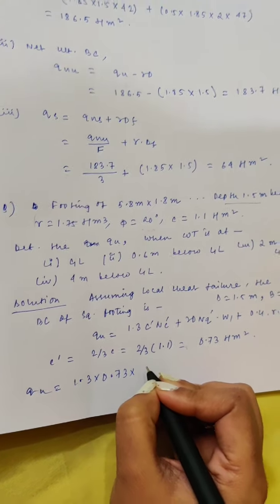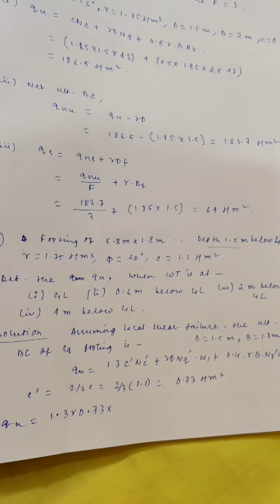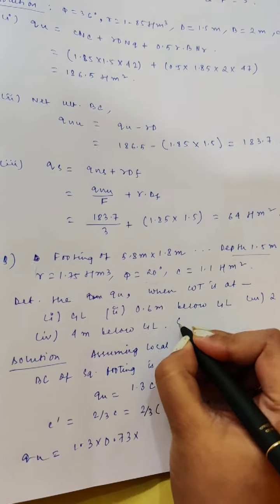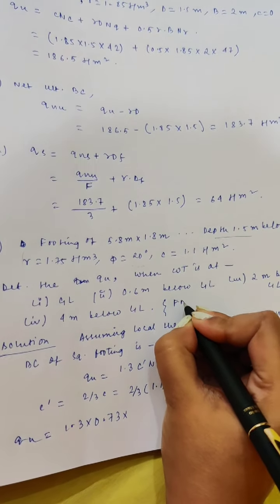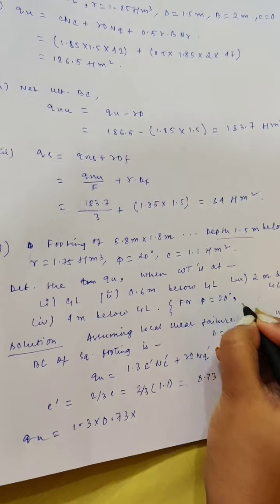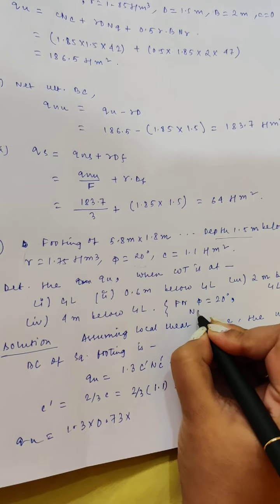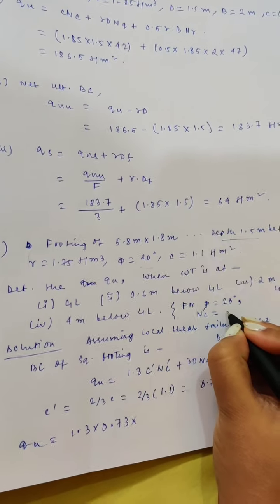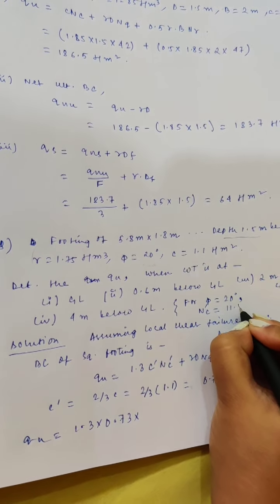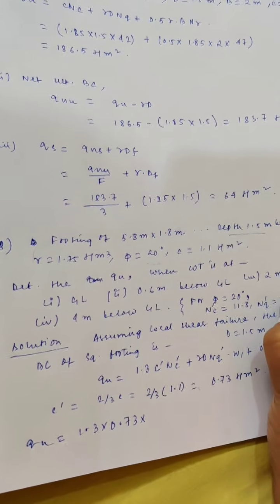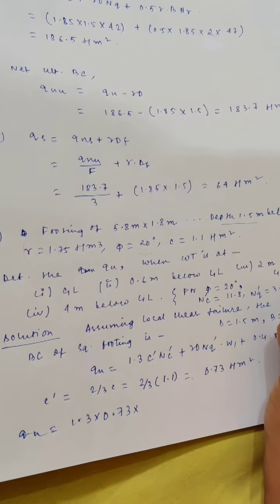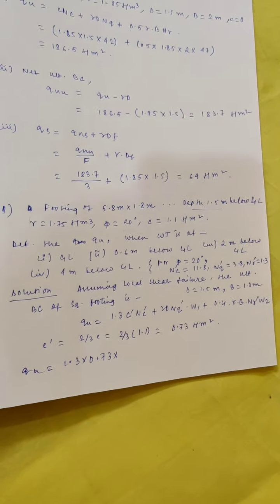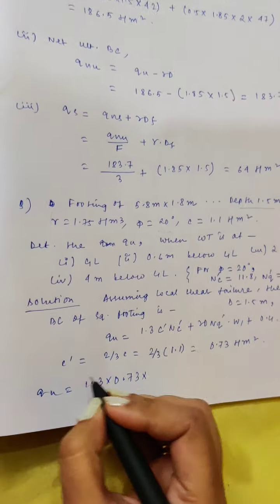Gamma is 1.75 ton per meter cube, D is 1.5 meter, and B is 1.8 meter. Now putting the values: qu = 1.3 × 0.73 × Nc' + gamma × D × Nq' × W1 + 0.4 × gamma × B × Ngamma' × W2.